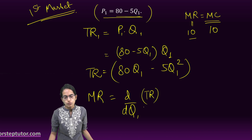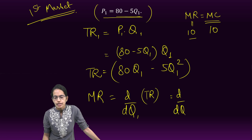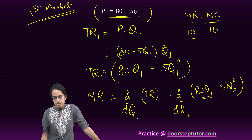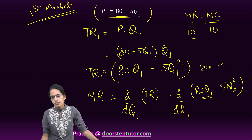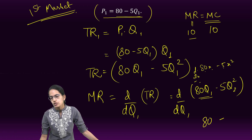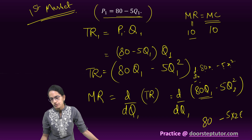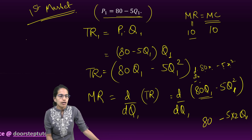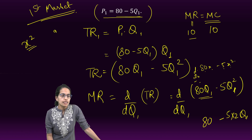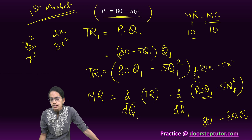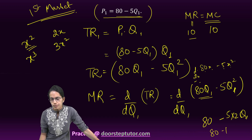Marginal revenue is simply the first-order derivative of total revenue. So MR = d/dQ1 of (80Q1 − 5Q1²). Differentiating: d/dx of 80x gives 80, and d/dx of 5x² gives 5 × 2x = 10x. So the marginal revenue becomes 80 − 10Q1.